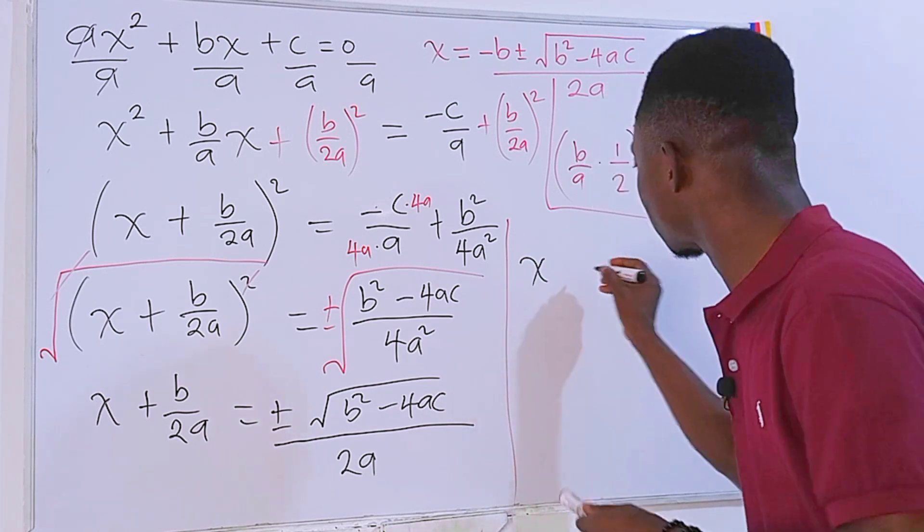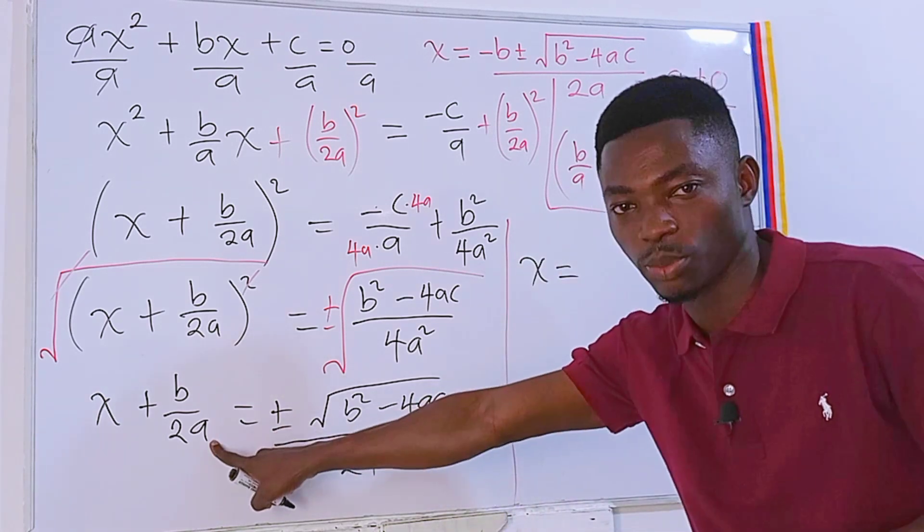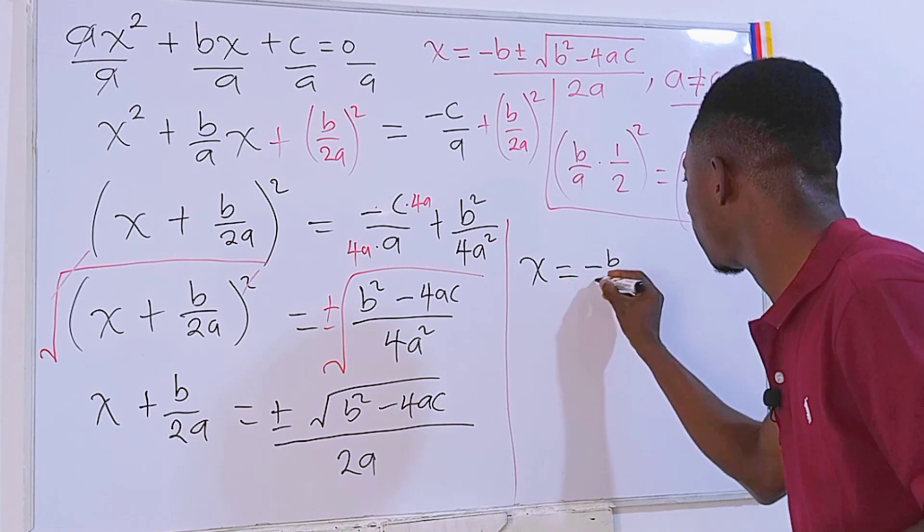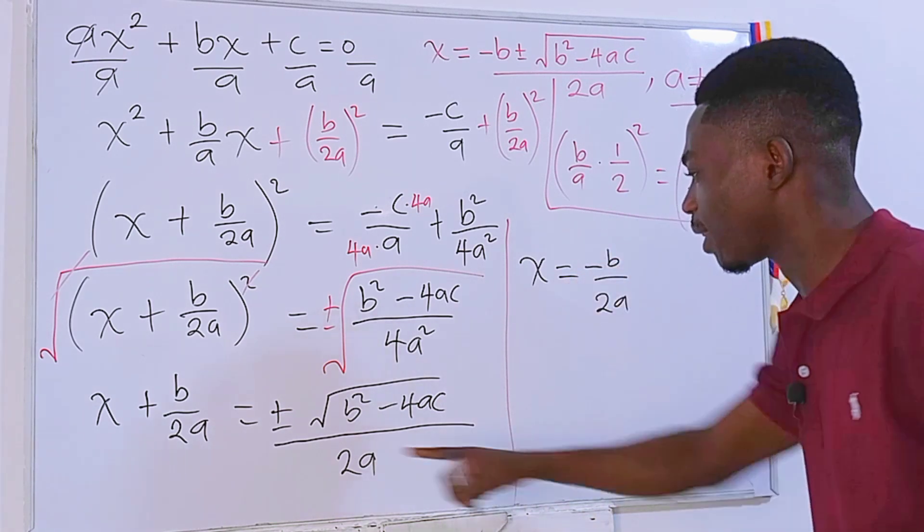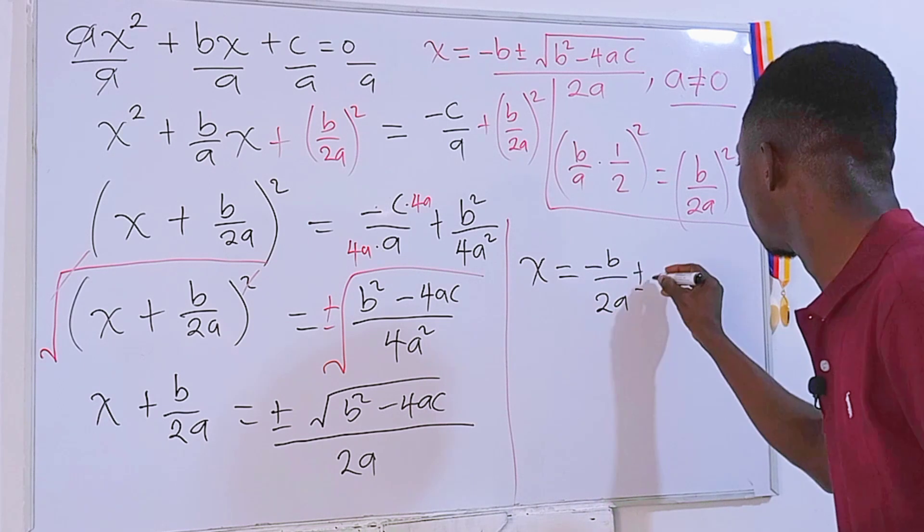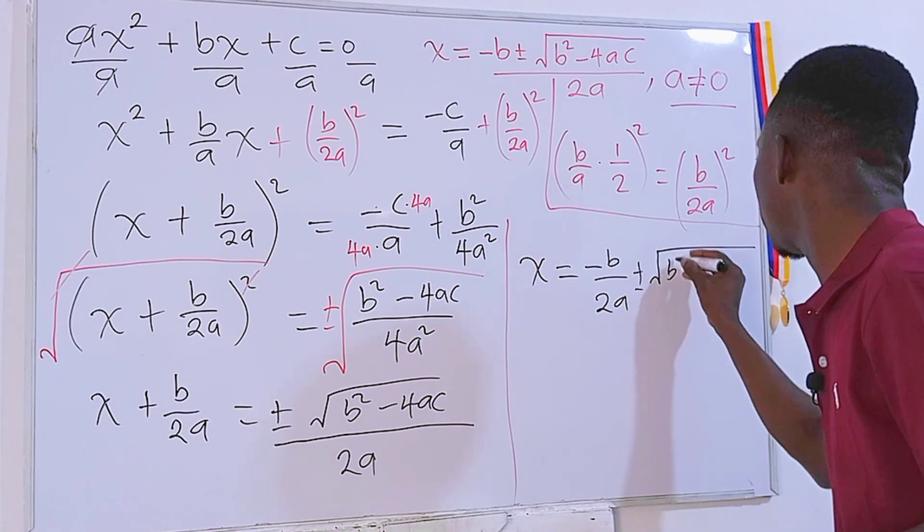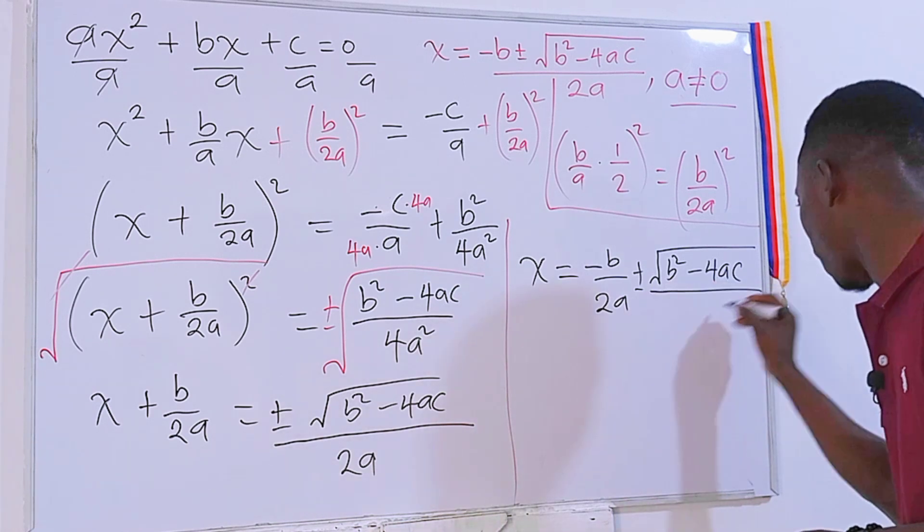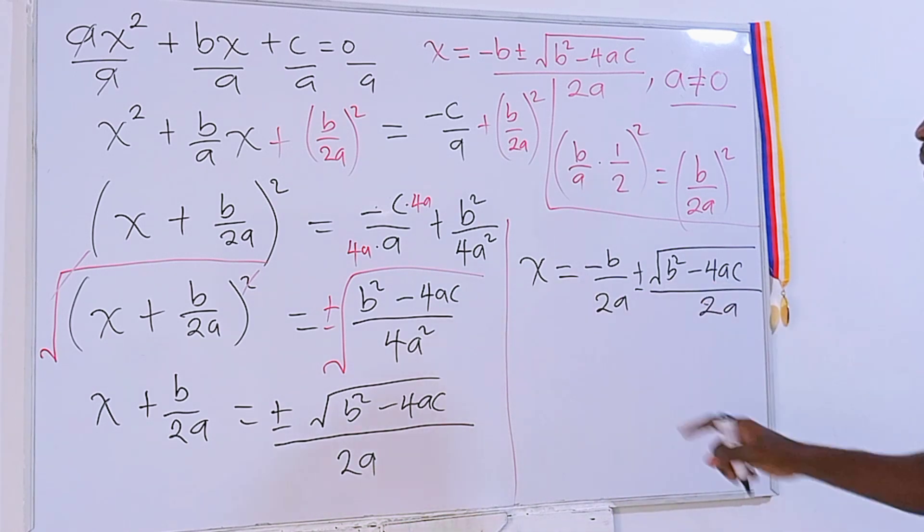We have x is equal to, this is positive, if it comes here it will be minus b over 2a, then plus or minus square root of b squared minus 4ac, all divided by 2a.